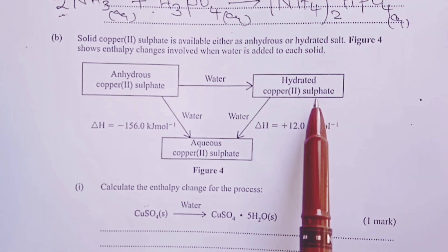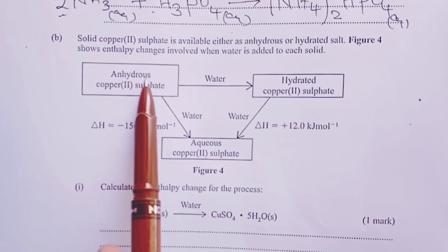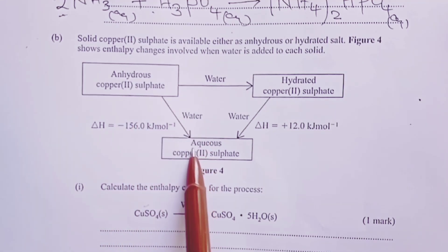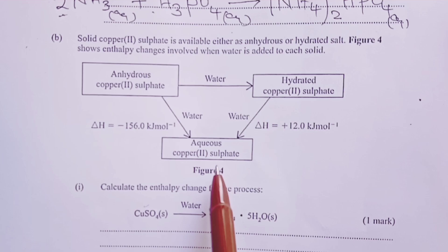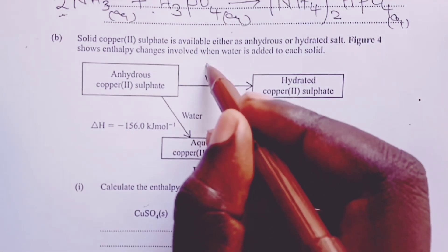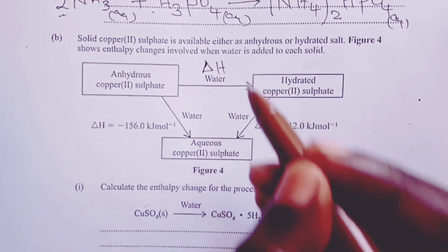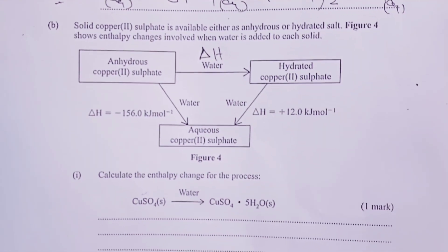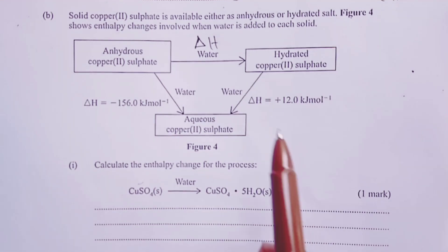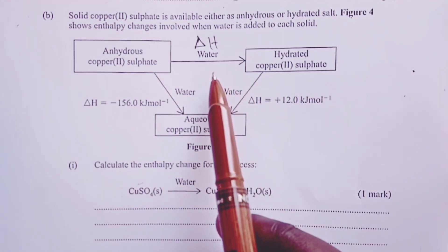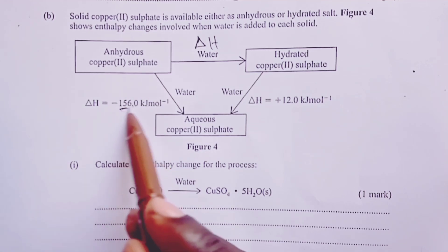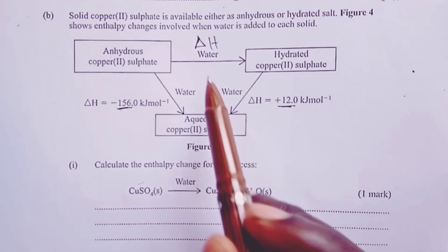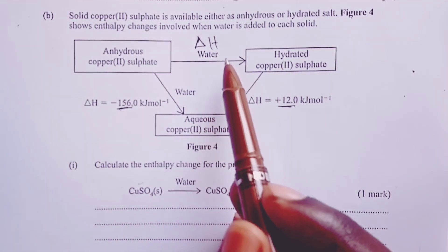By Hess's law, the heat change for the two routes that take us from anhydrous copper(II) sulfate to aqueous copper(II) sulfate should be equal. So if we let the amount of energy up here to be ΔH, then we can use Hess's law with these two heat changes given here to actually get the value of ΔH.